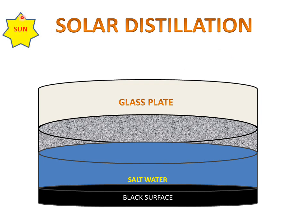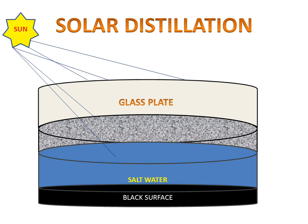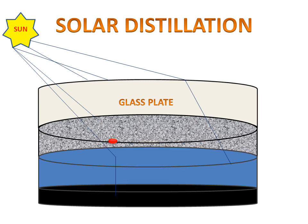Now when the sun will send radiation to the glass plate, some radiation will be scattered and some will be absorbed by the water. By absorbing radiation, the salt water will start forming vapors and these vapors continuously will form and go upward.